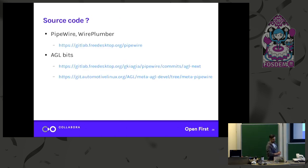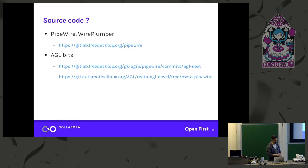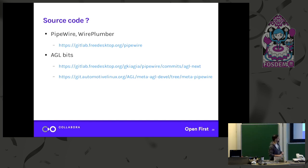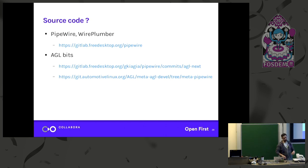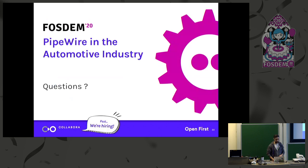The source code is all on gitlab.freedesktop.org/pipewire — you can find both PipeWire and WirePlumber there. You can make merge requests, file issues, and find the wiki there. On the AGL front, I maintain a branch of PipeWire with the AGL-specific commits, although I'm constantly pushing them upstream — as soon as they're merged upstream, I remove them from the branch and rebase. And then there is the MetaPipeWire Yocto layer — AGL is based on Yocto — so these are the recipes to build PipeWire and WirePlumber inside AGL. Thank you very much. Any questions?